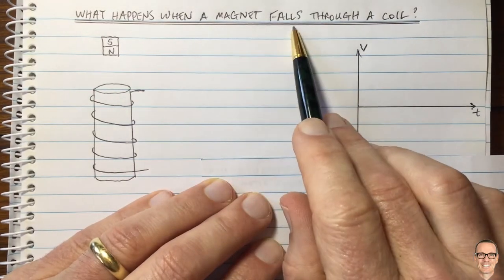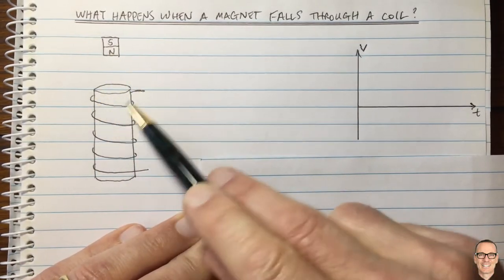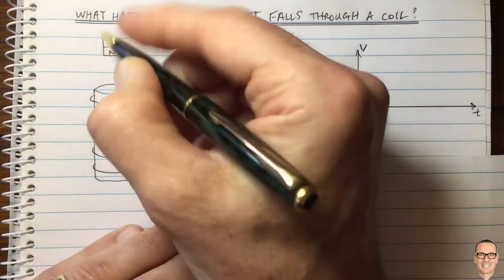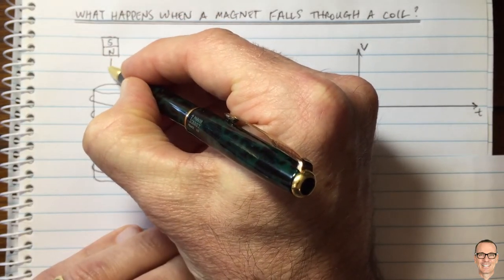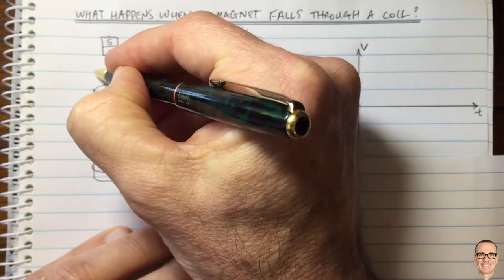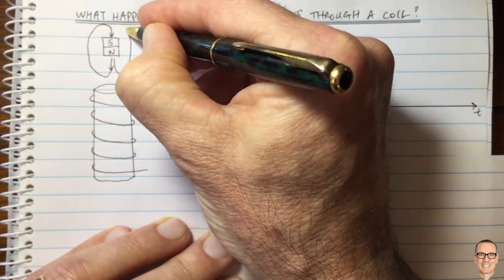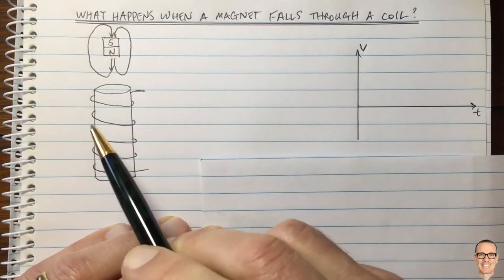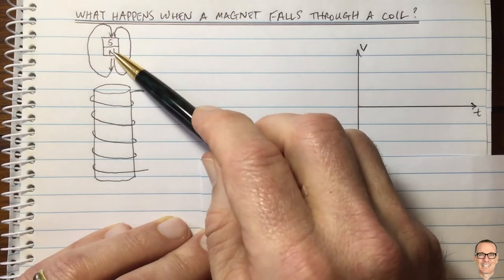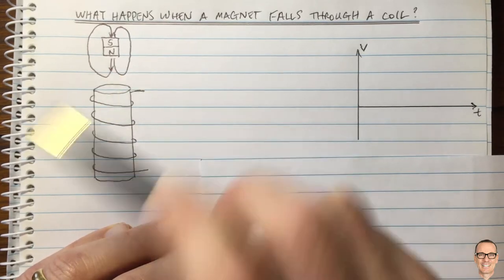So what happens when a magnet falls through a coil? Here we have a magnet and a coil wrapped around a paper tube, and the magnet is falling down. The magnetic field from the magnet below is coming out of the north, wrapping around and connecting back into the south. Lenz's law tells us that the coil will produce a magnetic field that opposes the change, since the magnetic field is increasing as it approaches the coil.